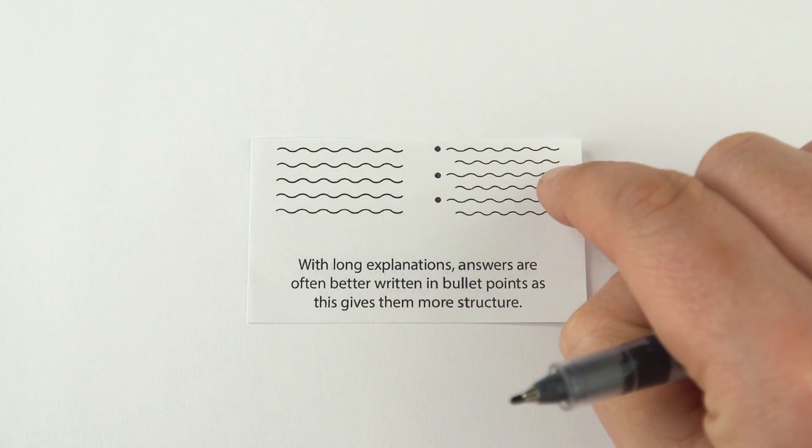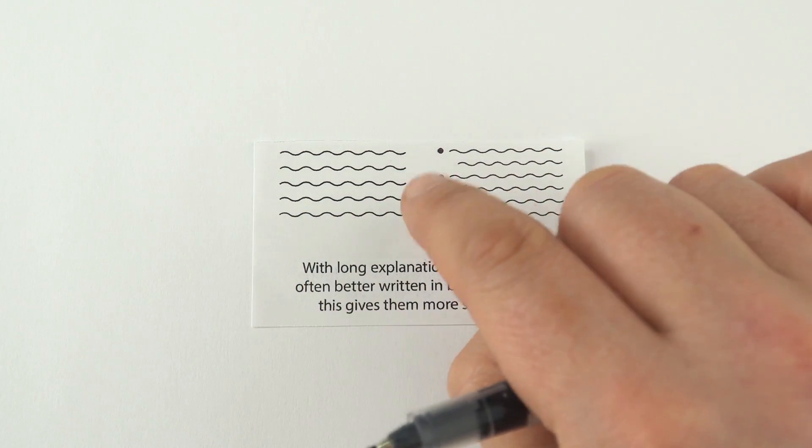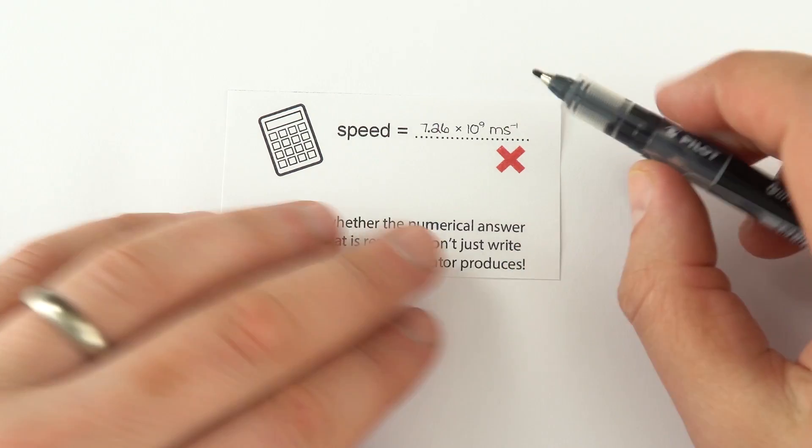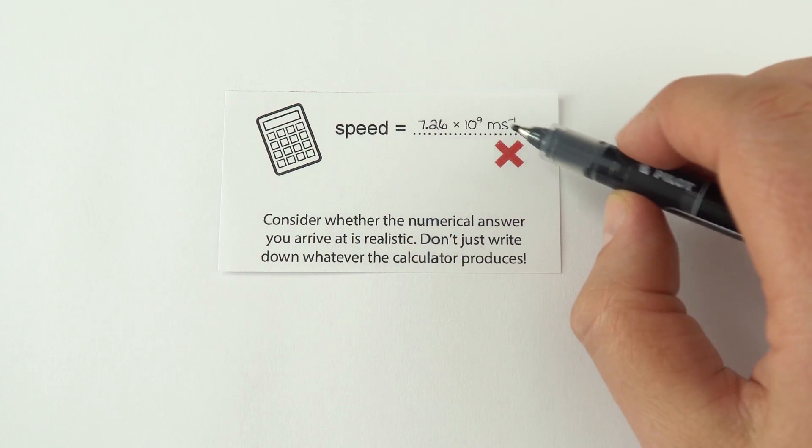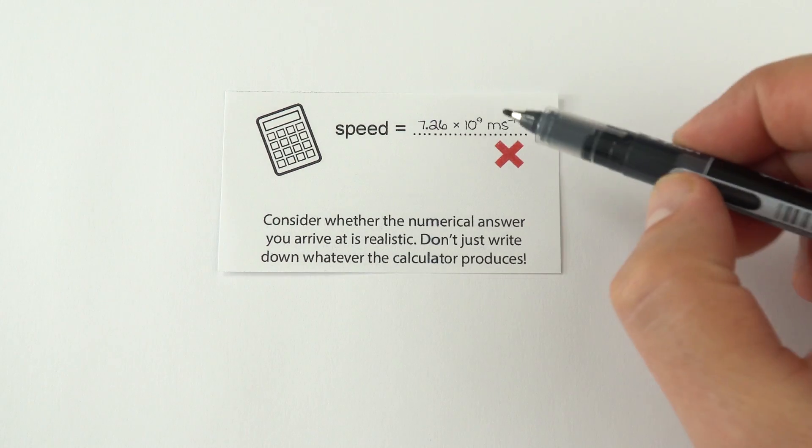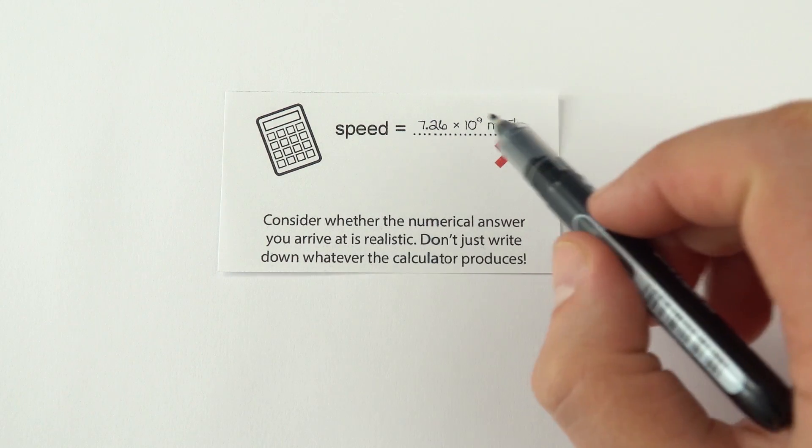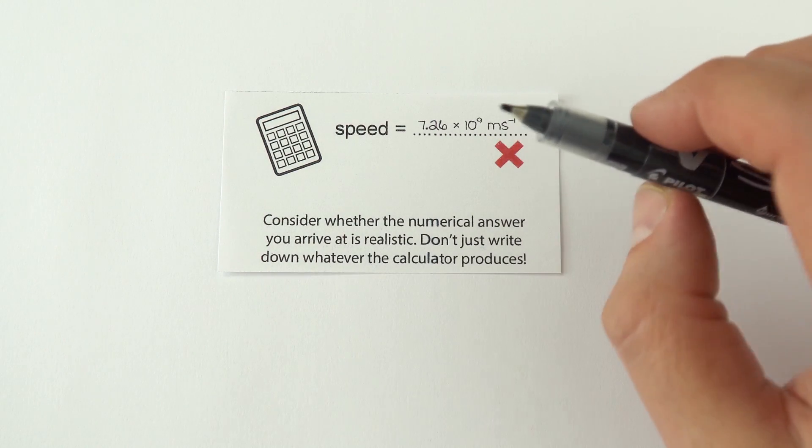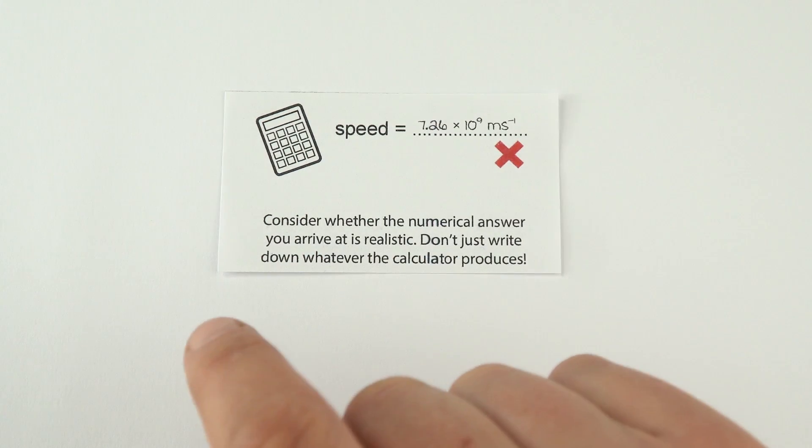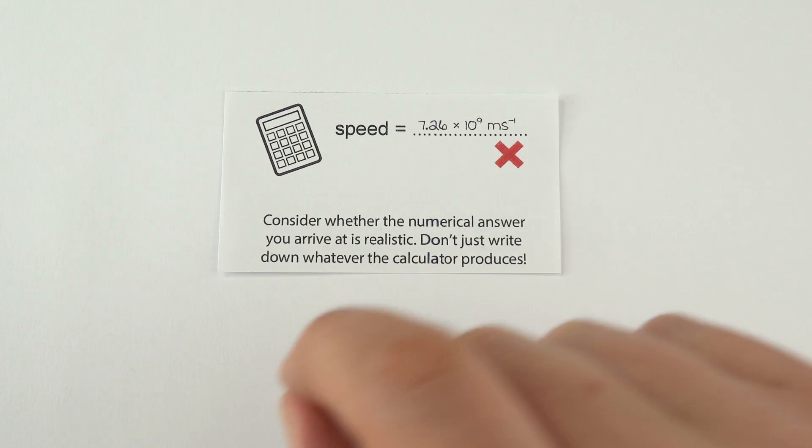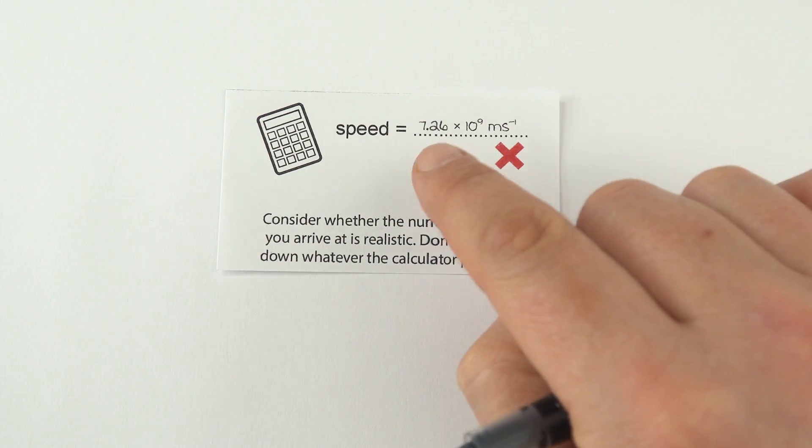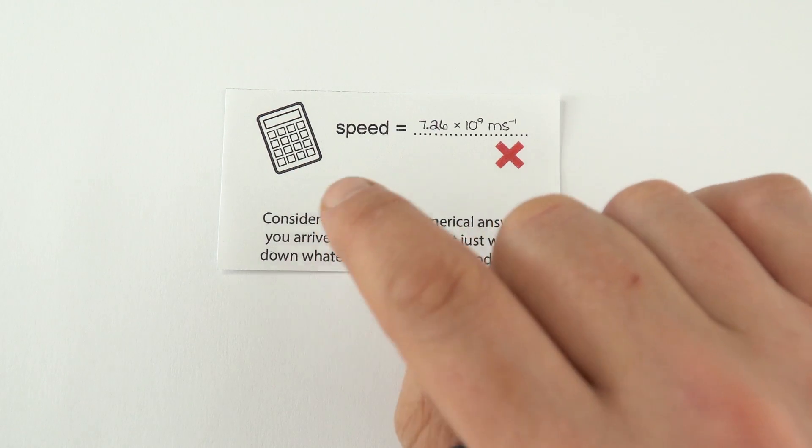The other thing is, when you do write down an answer, just take a few seconds to think, is that appropriate? A speed of 7.26 times 10 to the 9 meters per second. That can't be right. That's quicker than the speed of light. So this one here must be wrong. Don't just write down whatever the calculator produces. Often, it's not that you've got your physics wrong. You've just maybe put something wrong into your calculator display. You forgot maybe something raised to a negative power rather than a positive power.